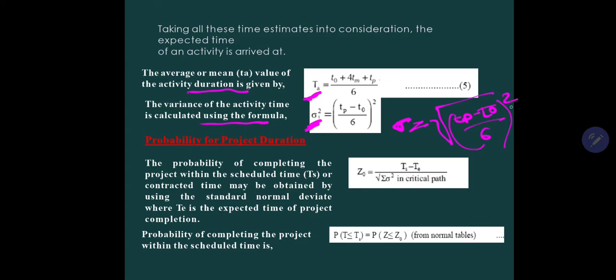The probability of the project duration is called Z. Formula is given as: the estimated time divided by under root of sigma square, summation of sigma square in critical path. What you have to do is only calculate summation of sigma square, the variance, only of those activities which are coming under the critical path. The probability of completing the project within the scheduled time or contracted time may be obtained by using the standard normal deviate where T is the expected time of project completion. The probability can be calculated from this formula and the values are obtained from normal tables.